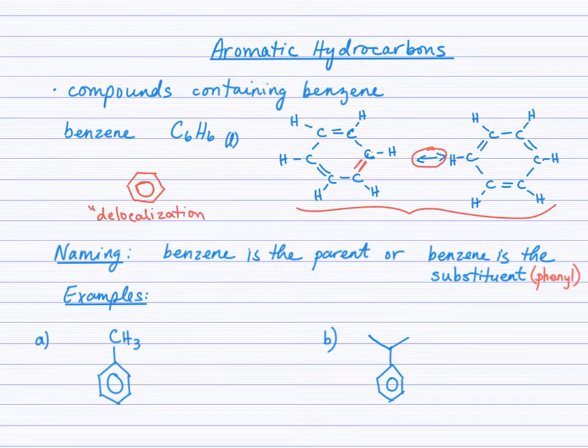So, I'll just write that word out, delocalization of electrons. And that's what actually brings chemical stability to benzene. We haven't discussed reactions yet of the hydrocarbons, but we will, and I'll revisit this idea of stability in the benzene ring when we cover those reactions. So, today we're really focused on the naming and drawing of the structures, and I think when you know how to name it, you'll know how to draw it.